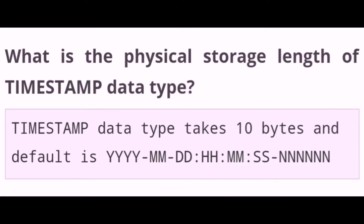What is the physical storage length of the timestamp data type? The timestamp data type takes 10 bytes and its default value is year-month-date colon hours-minutes-seconds-nanoseconds.